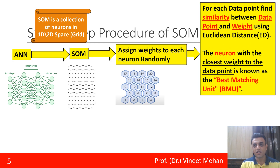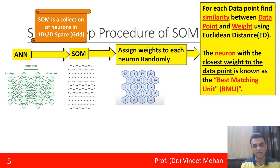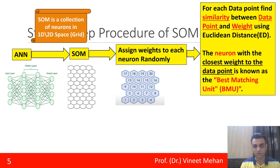For each data point, similarity is to be identified — similarity between the data point and the weight. We calculate this similarity using Euclidean distance. The neuron with the closest weight to the data point, meaning the smallest Euclidean distance, is known as the Best Matching Unit, or BMU.